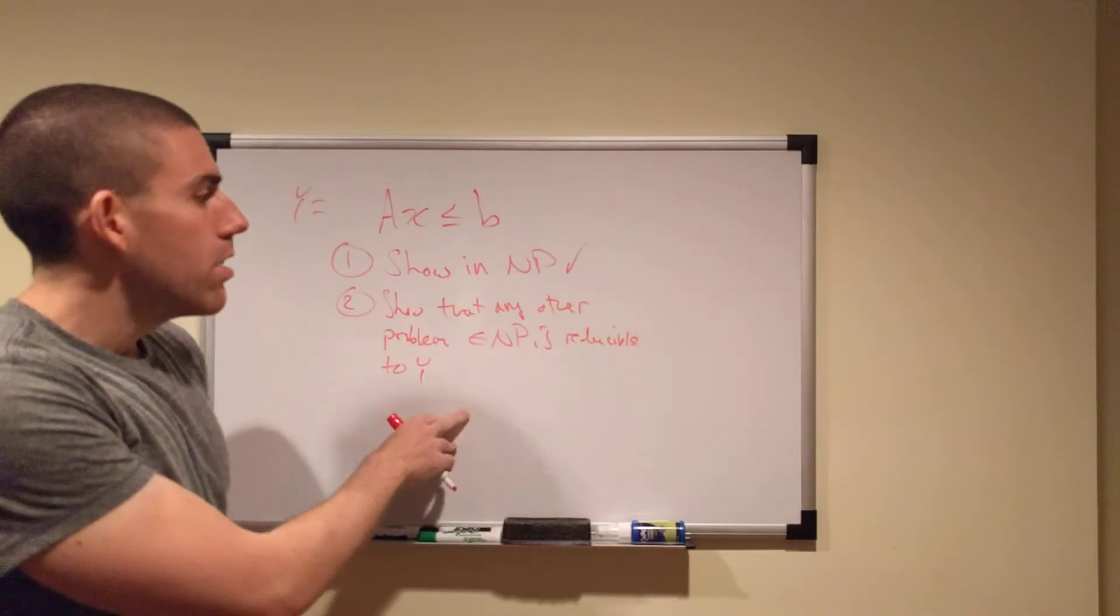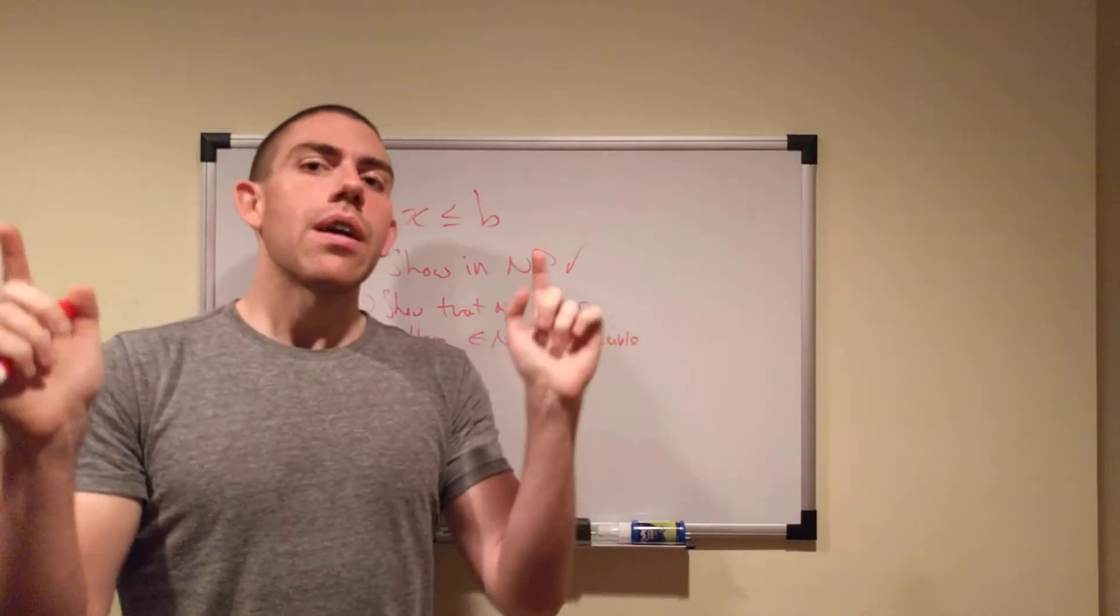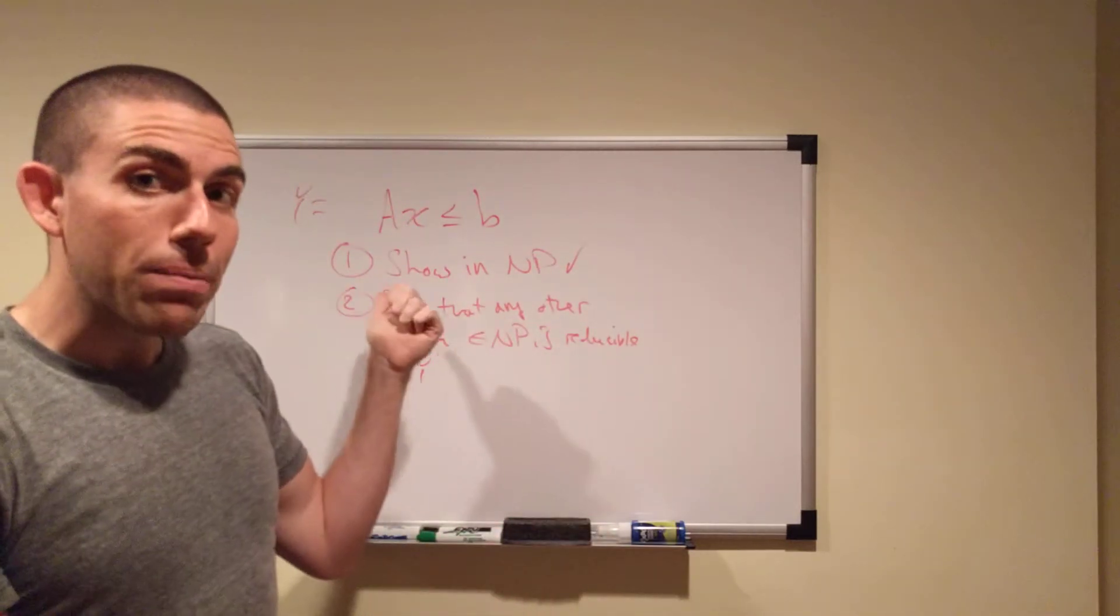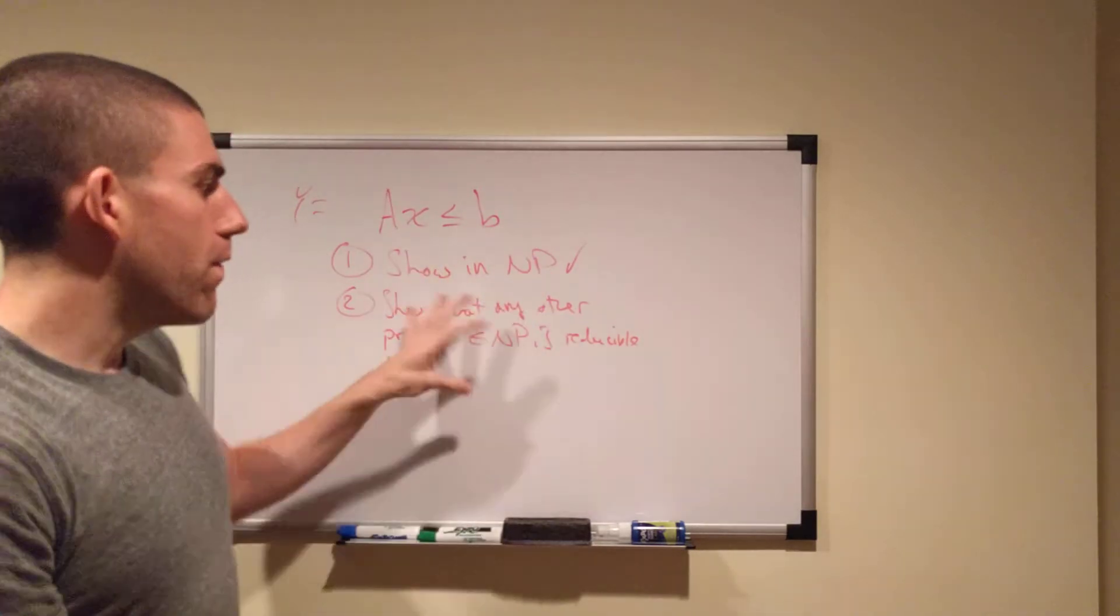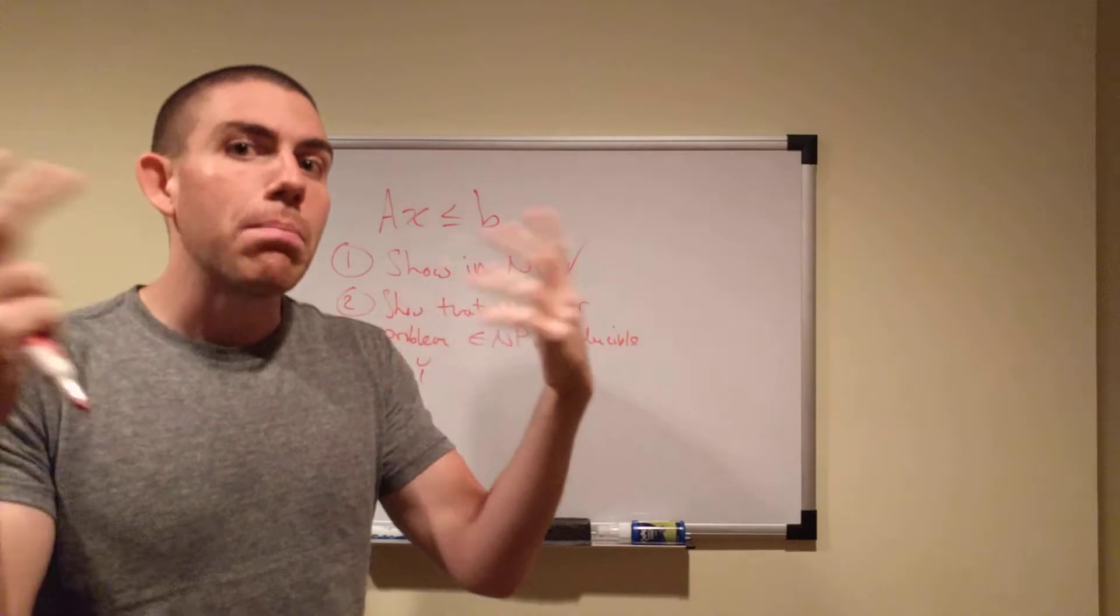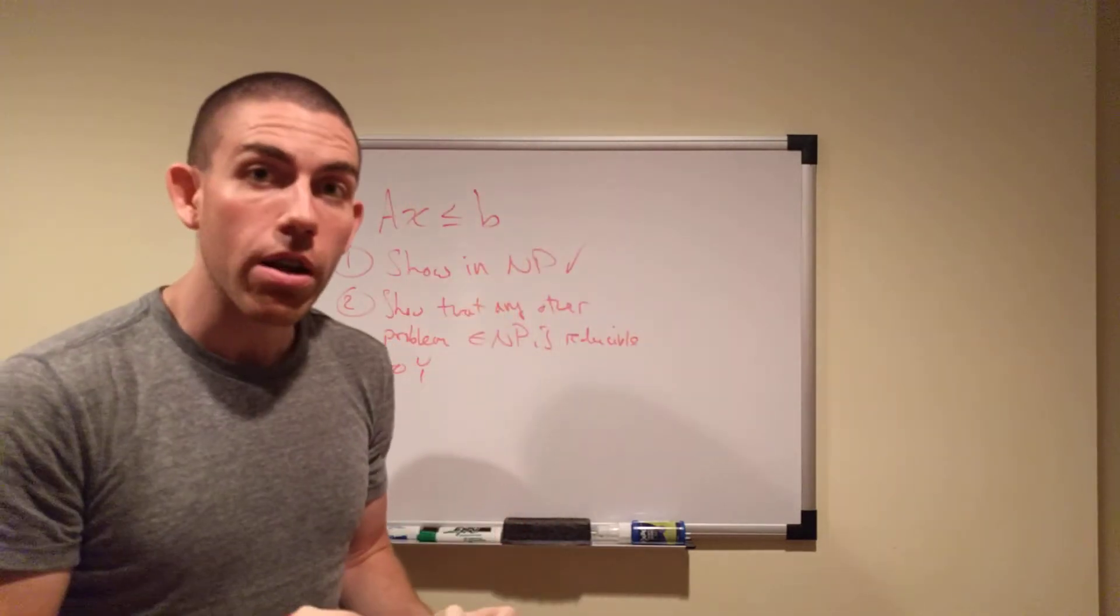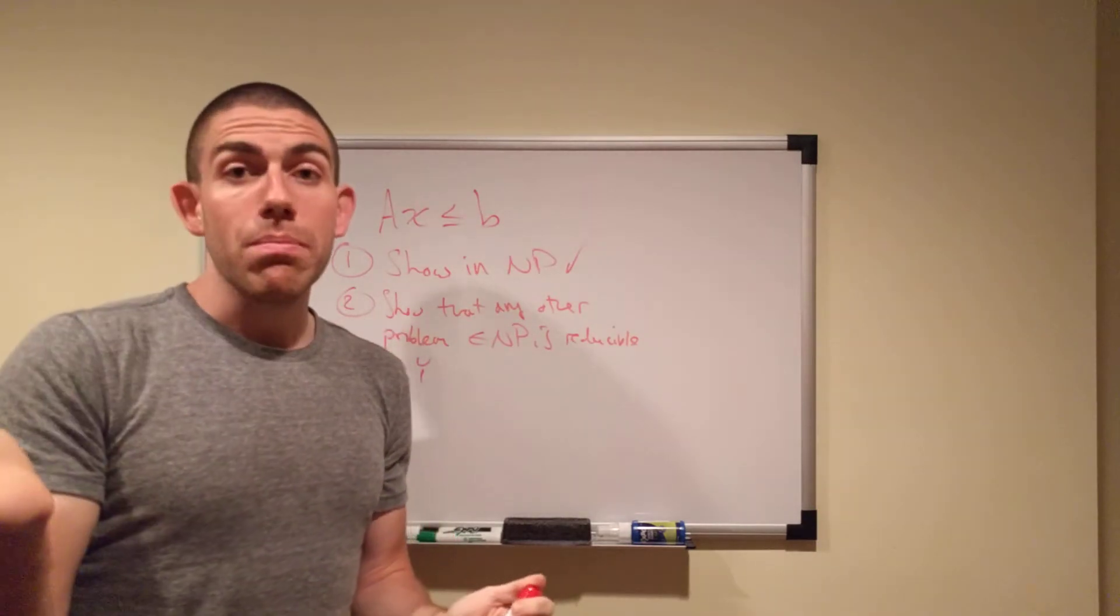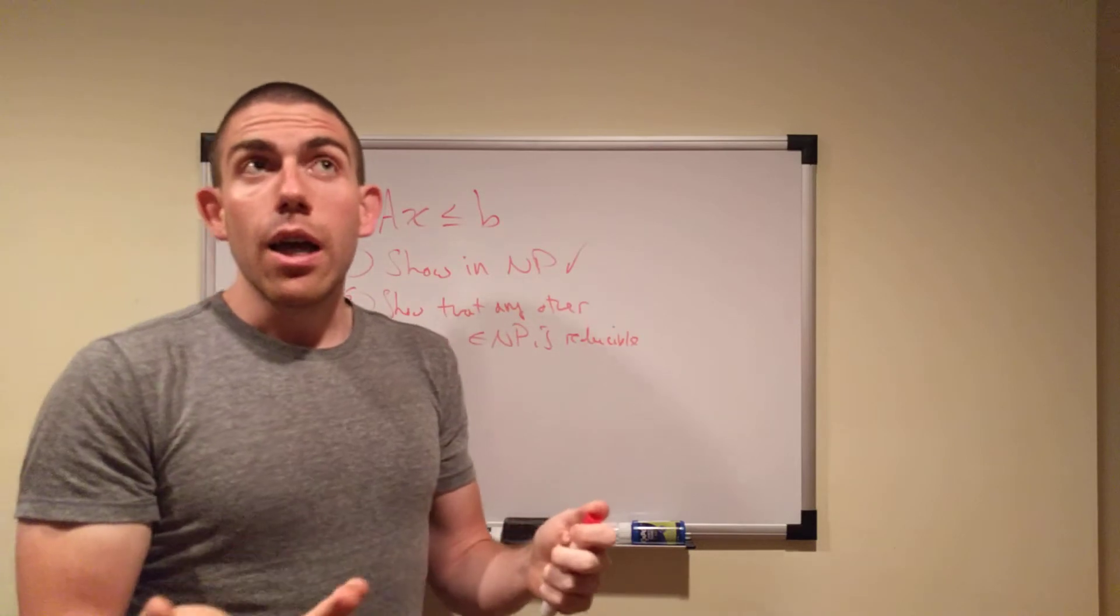This is the harder part. We have to show that some other problem, any other problem in NP is reducible to this one. Now, luckily for us, the fact that this is a requirement of being in NP means that every problem in NP is essentially the same problem, right? Because they can all be reduced to each other. So if we can find one problem and reduce it to this one, then we're done.